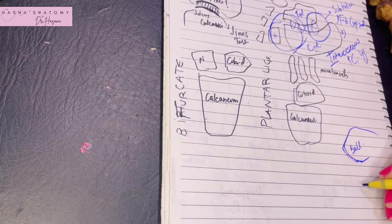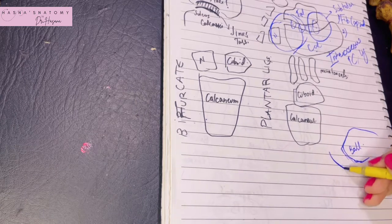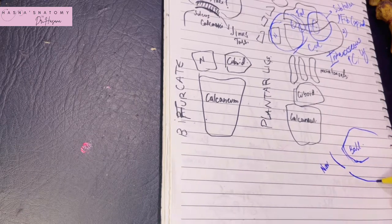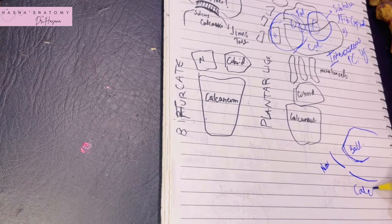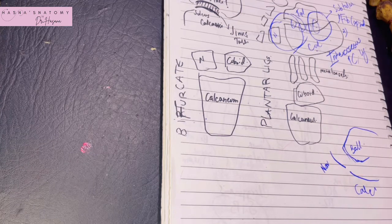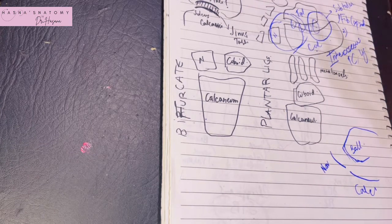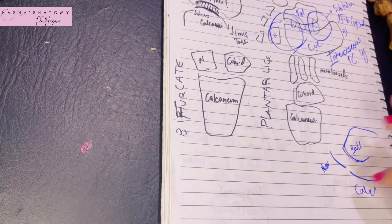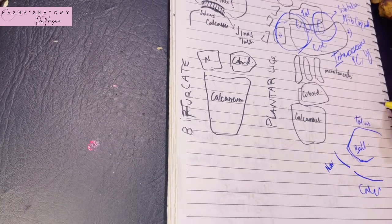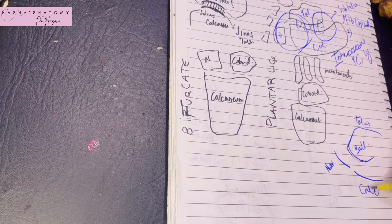The socket is formed partly by the navicular bone and partly by the calcaneus bone, making this a ball-and-socket joint. Other parts forming the socket are the spring ligament and the medial limb of the bifurcate ligament, which will be explained shortly. The talo-calcaneo-navicular joint has a fibrous capsule that every joint has, and then the spring ligament.